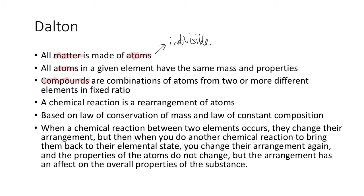All atoms of the same element have the same mass and the same properties. Compounds are combinations of atoms — two or more different elements in a fixed ratio. That's important: if you've got one of one type of atom, then you've got two of the other type all the way through the substance. A chemical reaction is a rearrangement of atoms — the idea that you're rearranging how they're attached to each other. And it's based on the law of conservation of mass and the law of constant composition.